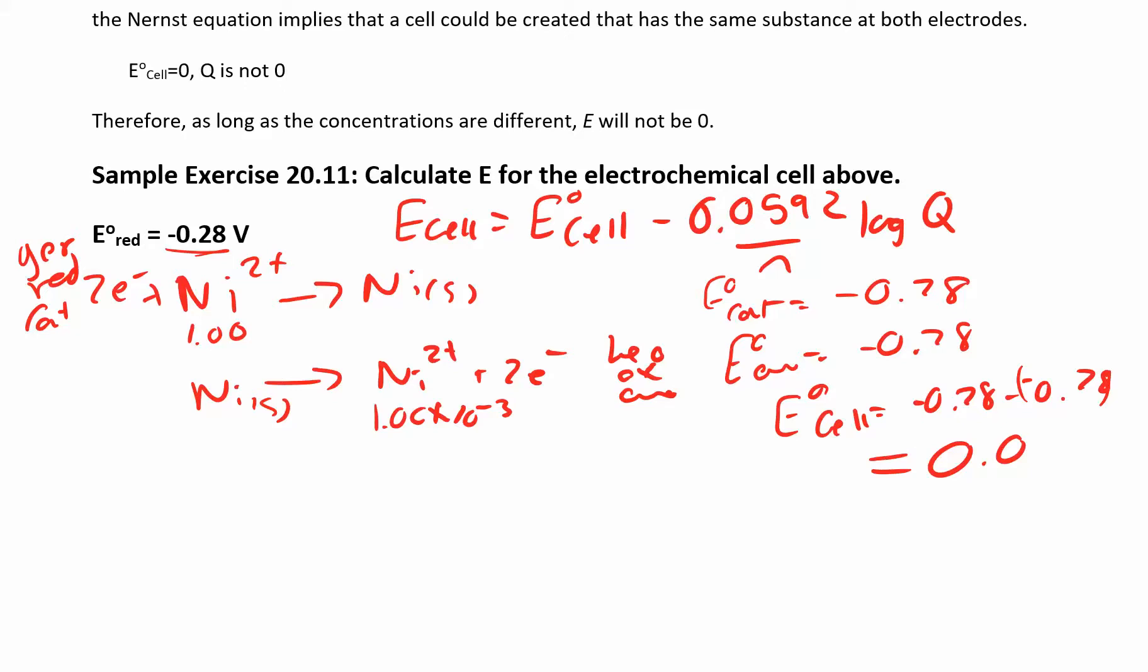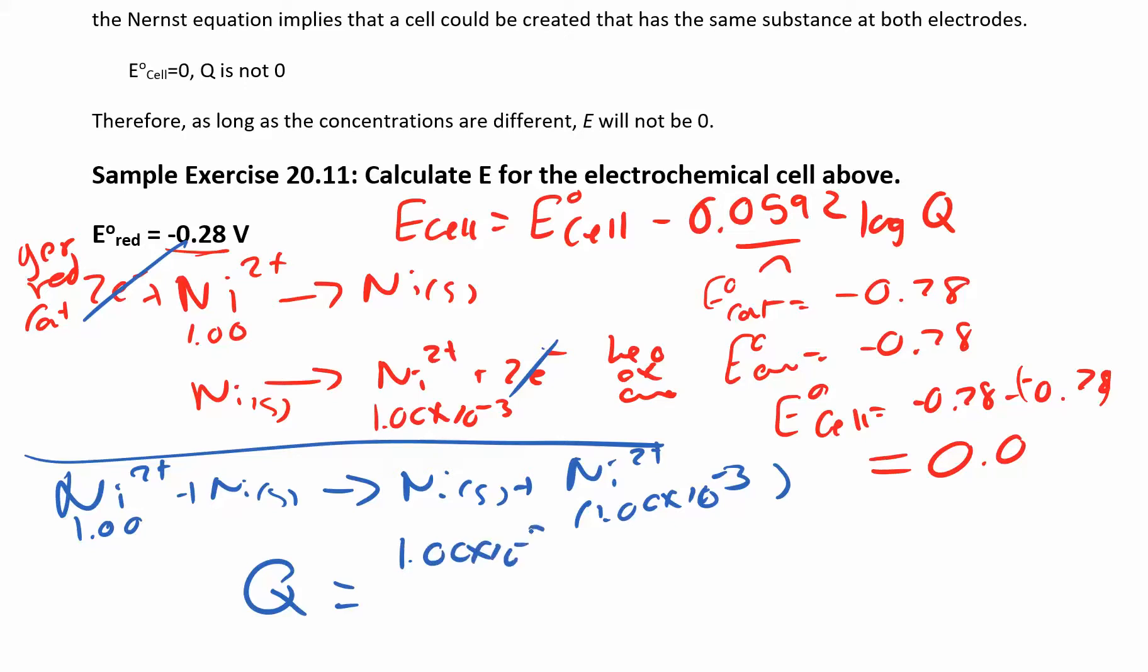Now, to solve for your Q, though, if you look at this reaction here, we'll just cancel the electrons here for a second. But what you'll see, we have nickel 2+ that has a concentration of 1 molar and nickel solid. Don't really worry about the nickel solid. It's not going to be in there anyway. I just want to show you where the concentrations are, where they're coming from. And this is 1 times 10 to the negative 3. So the 1 times 10 to the negative 3, that's on the product side. So Q is 1 times 10 to the negative 3 divided by the reactants, which is just 1.